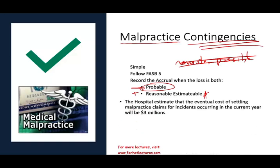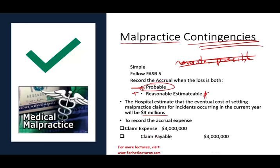For example, the hospital estimates that the eventual cost of settling malpractice claims for incidents occurring in the current year will be $3 million. They think they can estimate it, and there's a good chance they're going to lose. They will debit a malpractice insurance claim expense and credit a liability of $3 million. Part of operating healthcare is that you're going to be sued for malpractice, so you have to account for this as part of your operating expenses.